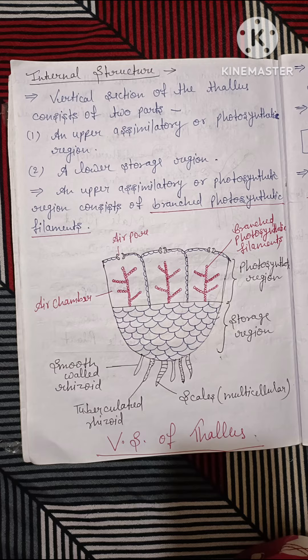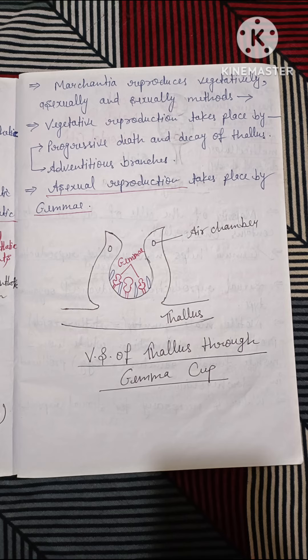Marchantia reproduces by vegetative, asexual, and sexual methods. Vegetative reproduction takes place by progressive death and decay of the older part of the thallus and through adventitious branches. Asexual reproduction takes place by gemmae, which are found on the thallus surface through the gemma cup.